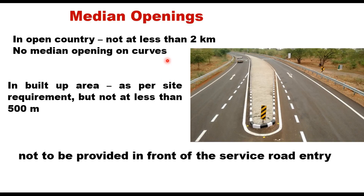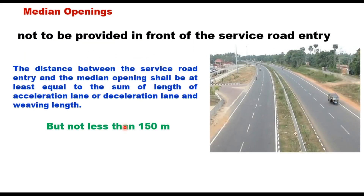It should be ensured that no median openings are provided on horizontal and vertical curve sections. In built-up areas, median openings shall be provided as per site requirement, and the spacing between two median openings shall not be less than 500 meters. Median openings shall not be provided in front of service road entries, and the median opening shall be at least equal to the sum of the length of the acceleration or deceleration lane and weaving length, but in no case less than 150 meters. The location of opening shall be decided to minimize contra flow.